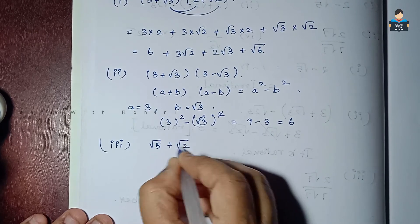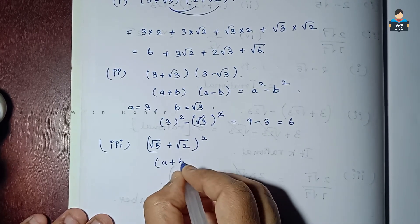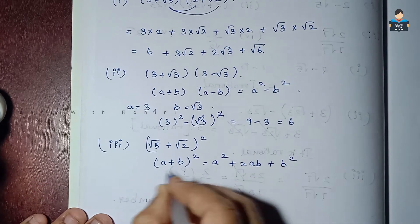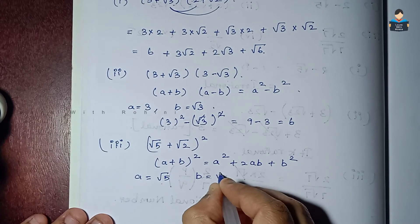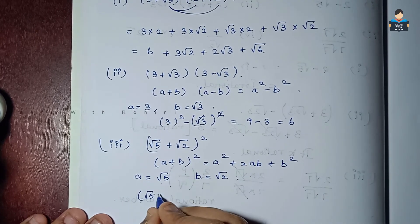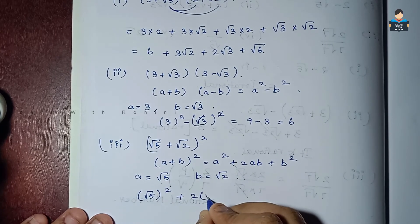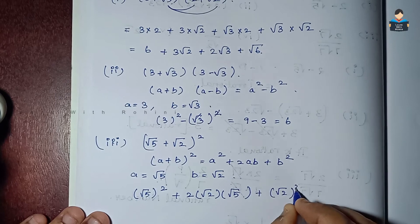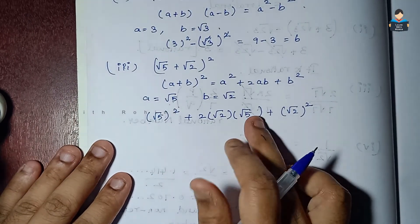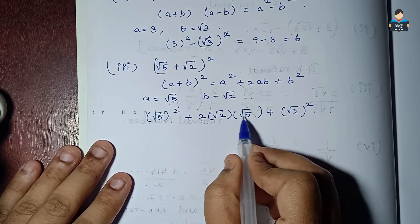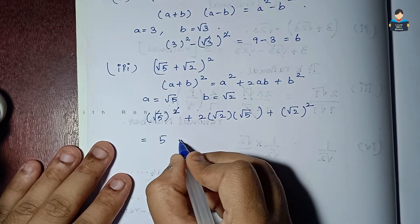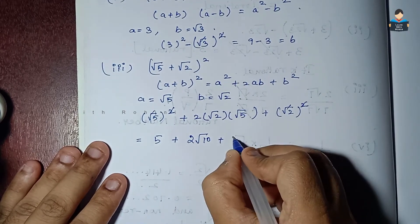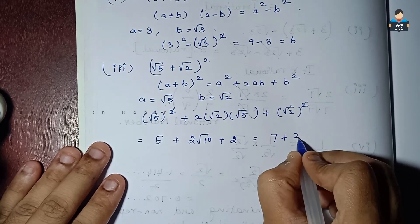Third subdivision: (√5 + √2)² uses the identity (a + b)² = a² + 2ab + b². Here a = √5 and b = √2. So we get (√5)² + 2 × √5 × √2 + (√2)², which simplifies to 5 + 2√10 + 2, giving the answer 7 + 2√10.